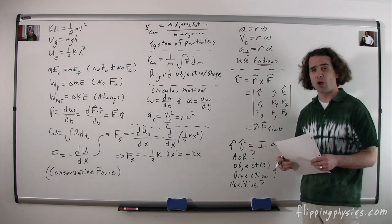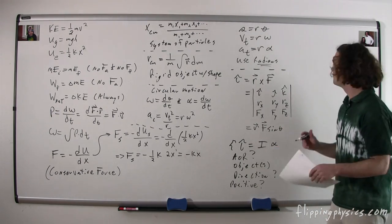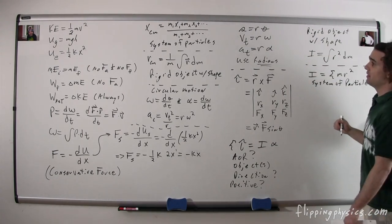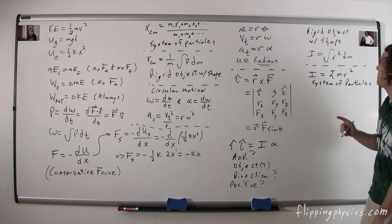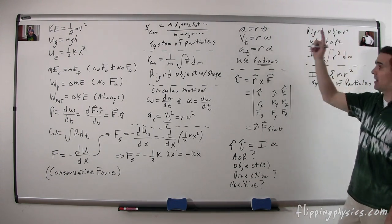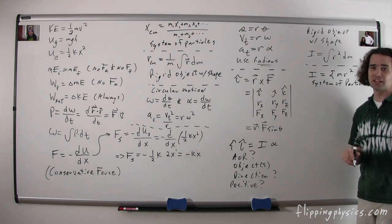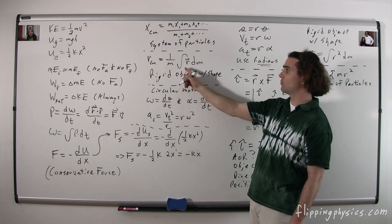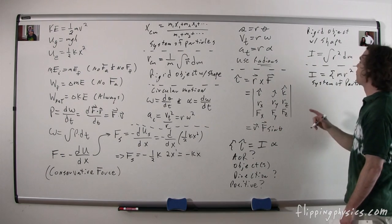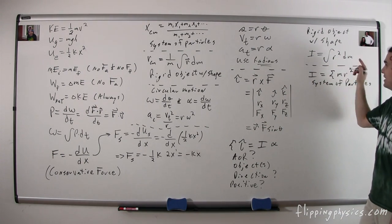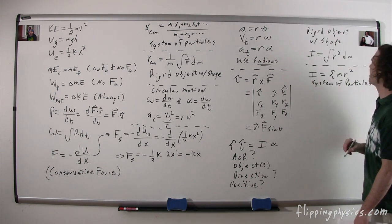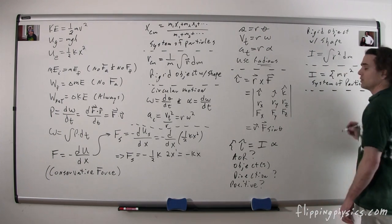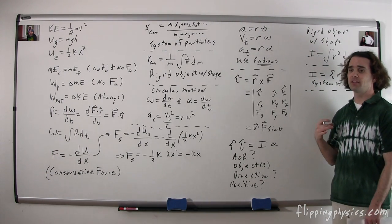The moment of inertia, also called rotational mass, has two different equations just like center of mass. For a rigid object with shape, it involves an integral: I = ∫r² dm, where r is the distance from the axis of rotation, and you integrate with respect to mass. Be careful not to confuse this with the center of mass integral.